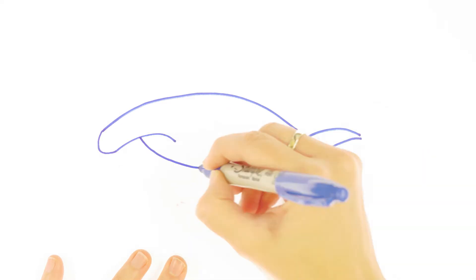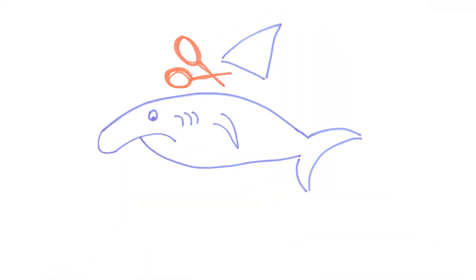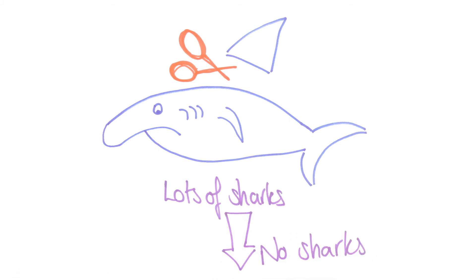Because of overfishing and activities such as shark finning, the number of sharks in the ocean is rapidly declining. Today, a quarter of all sharks are threatened with extinction.